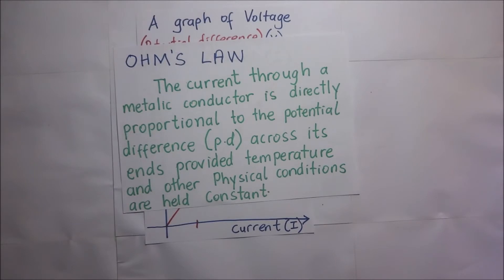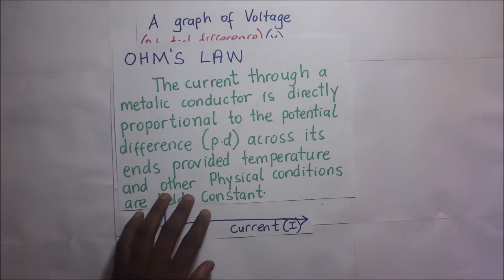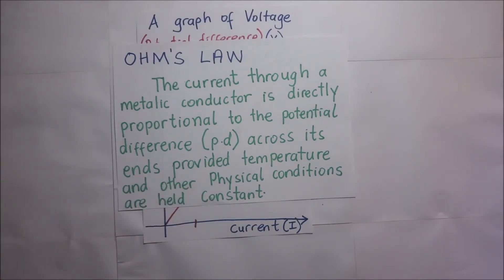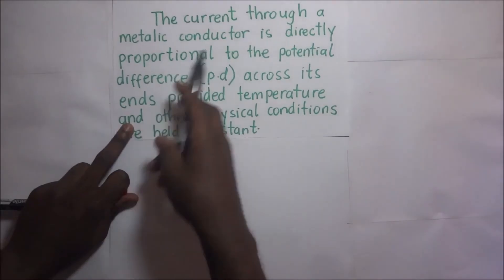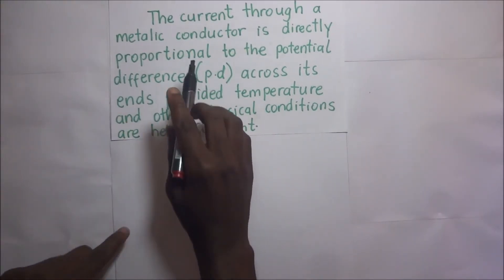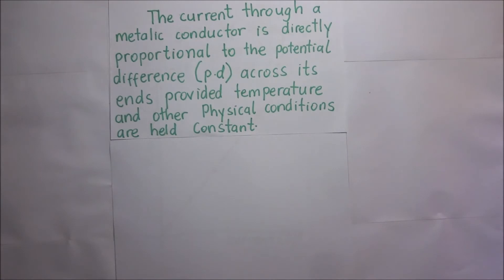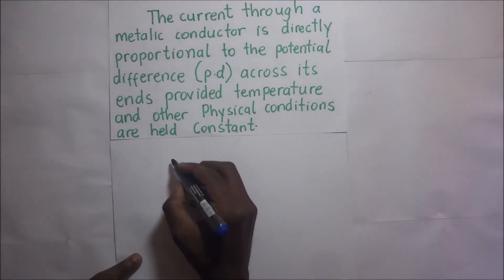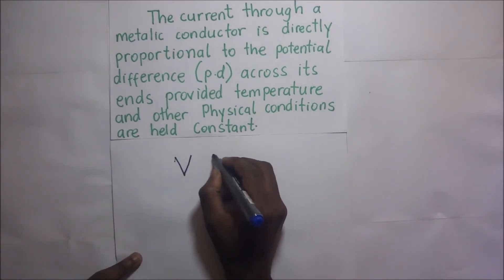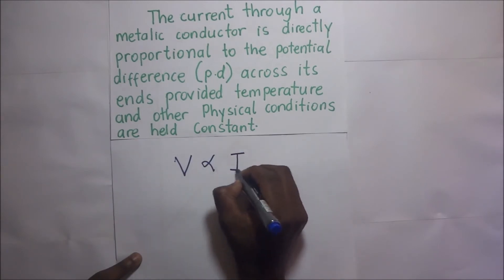Materials like nichrome wire are not so much affected by temperature conditions, so in most cases nichrome wire is used in these kinds of experiments. I used constantan wire, and constantan is also not bad — it gets the work done. Looking at this law, we can see that current is directly proportional to voltage.